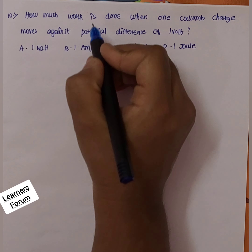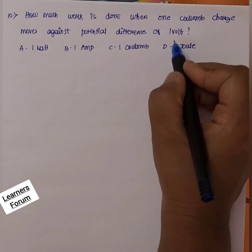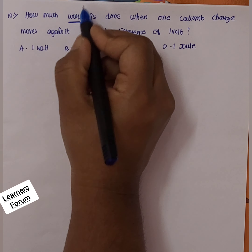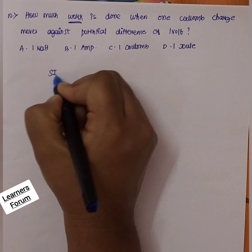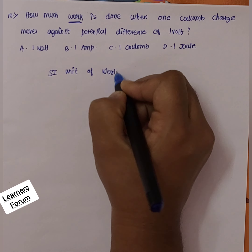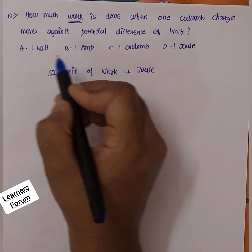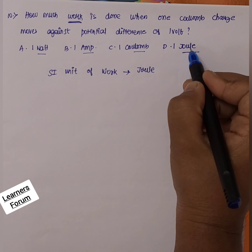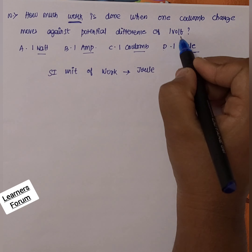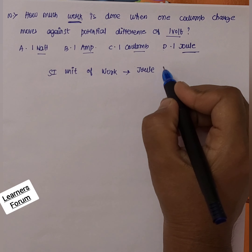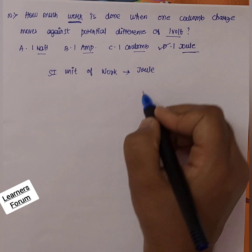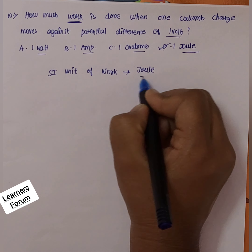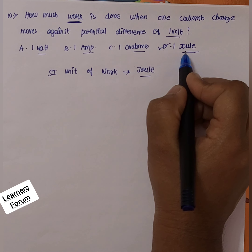Next question: how much work is done when one coulomb charge moves against a potential difference of one volt? This question is very simple — you need not calculate. The SI unit of work is joule. Comparing all the options: 1 watt, 1 ampere, 1 coulomb, and 1 joule — work must be in joules. Also, moving one coulomb charge against a potential difference of one volt requires 1 joule. So option D, 1 joule, is our correct answer.